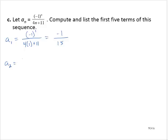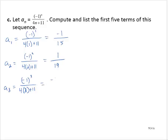a sub 2 would be negative 1 to the second power over 4 times 2 plus 11. Negative 1 to the second power means negative 1 times negative 1, which is positive 1. 4 times 2 plus 11 is 19. So a sub 2 is 1 over 19. a sub 3: negative 1 to the third power over 4 times 3 plus 11, that would be negative 1 over 23.